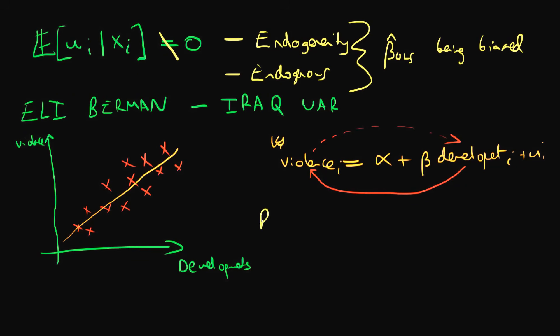This problem we call the issue of reverse causality, where as a result of the way in which we've estimated the equation, we've actually got causality acting in the opposite direction to the actual process we're interested in.